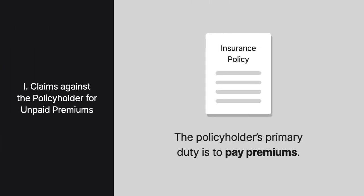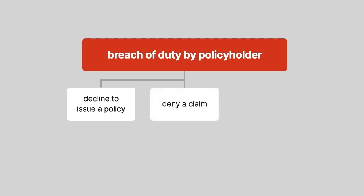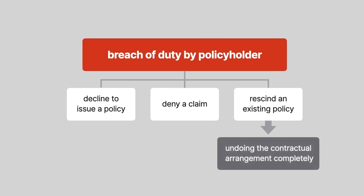Under the insurance policy, the policyholder's primary duty is to pay premiums. If a policyholder breaches this duty, the insurer may decline to issue a policy, deny a claim, or rescind an existing policy. If an insurer rescinds a policy, it means undoing the contractual agreement completely, which typically requires the insurer to return any prior premium payments to the policyholder.